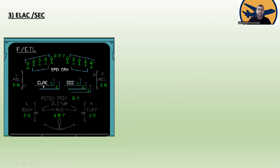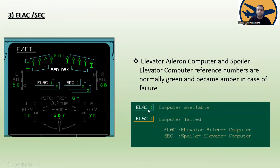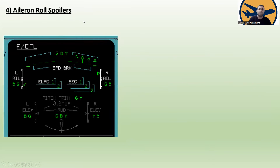Topic three is ELAC and SEC. On the Airbus there are two ELACs — Elevator Aileron Computers — and three SECs — Spoiler Elevator Computers. Their reference numbers are normally displayed in green and become amber in case of failure. For example, if ELAC 1 computer fails, that number turns amber.